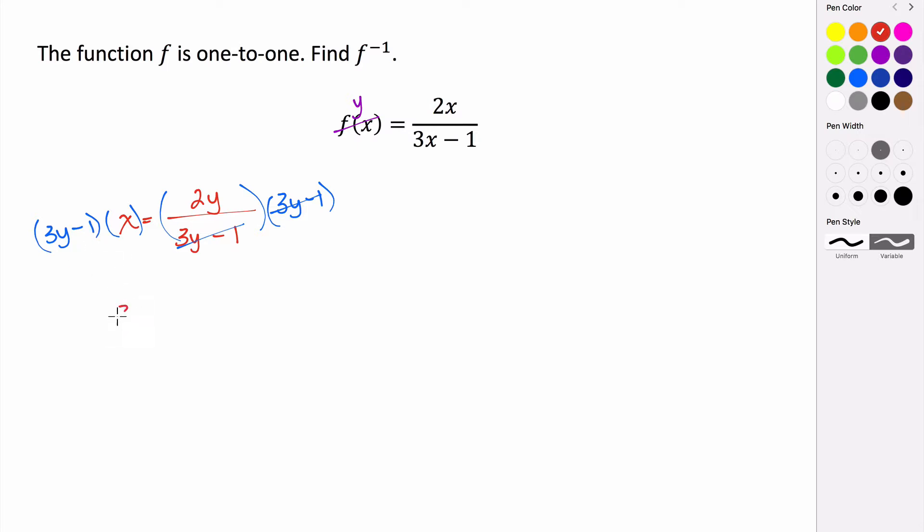This is going to give us 3xy minus x equals 2y. Then we're going to try and get all of the y's on the same side, so I'm going to subtract 3xy from both sides.